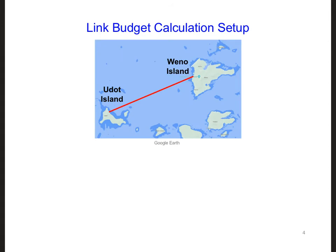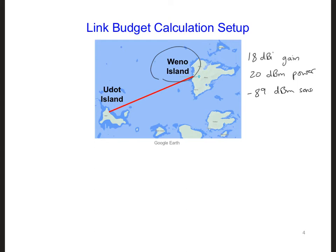So let's see if our current setup achieves this goal. The internet access point on Weno Island is connected to a Yagi-Uda antenna with 18 dBi gain, and the transmitting power is 20 dBm, and the receiver sensitivity is minus 89 dBm. dBm is with respect to milliwatts.